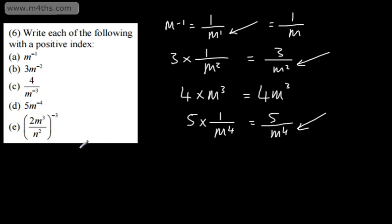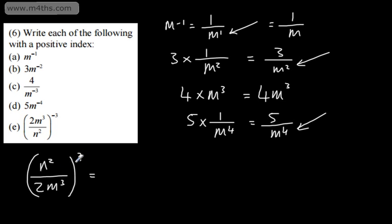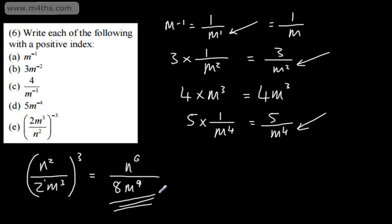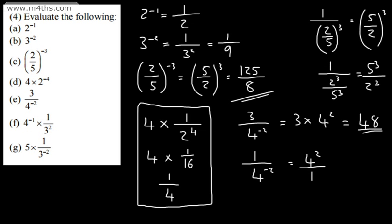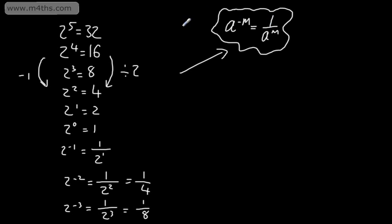We've got (2m cubed over n squared) to the negative 3. I'm going to write this as (n squared over 2m cubed) to the positive power of 3. We know that a to the power of m raised to the power of n is a to the power of m times n from a previous video. So n squared cubed is going to give me n to the power of 2 times 3, which is 6. Then I'm going to get 2 to the power of 3 — remember, there's a little 1 here, so it's 3 times the index, giving 2 cubed which is 8. Then m to the power of 3 times 3, giving m to the power of 9. So the final answer is n to the power of 6 divided by 8m to the power of 9. Essentially, all we need to do is abide by the law that a to the negative m can be written as 1 over a to the m.